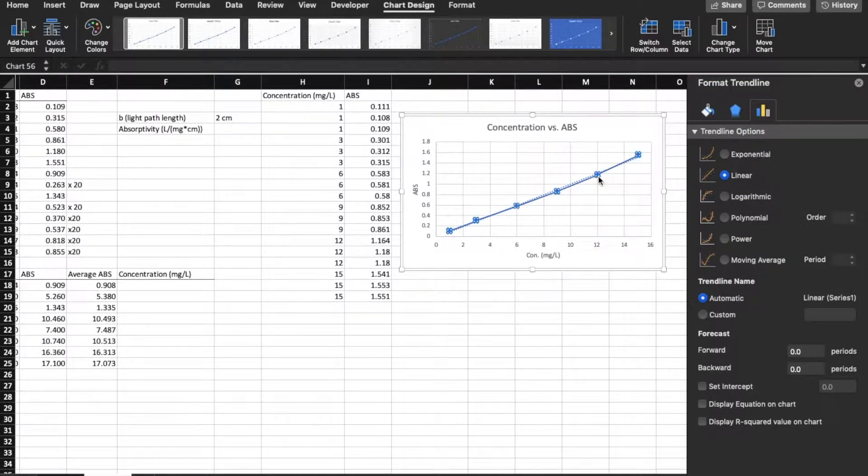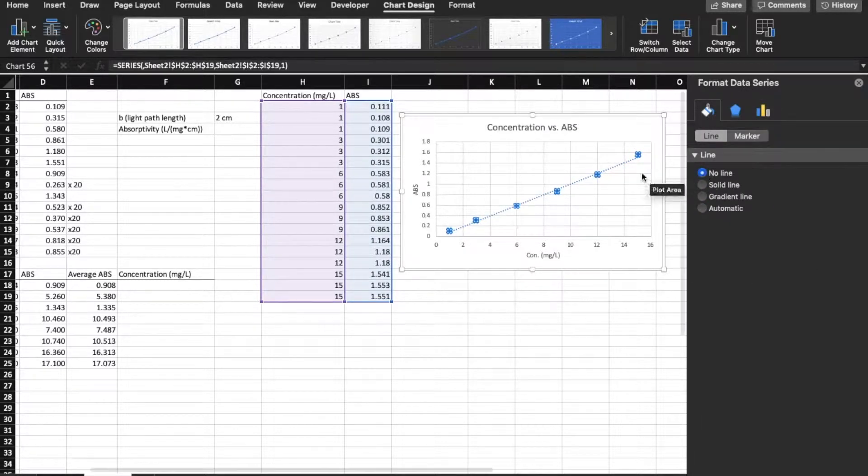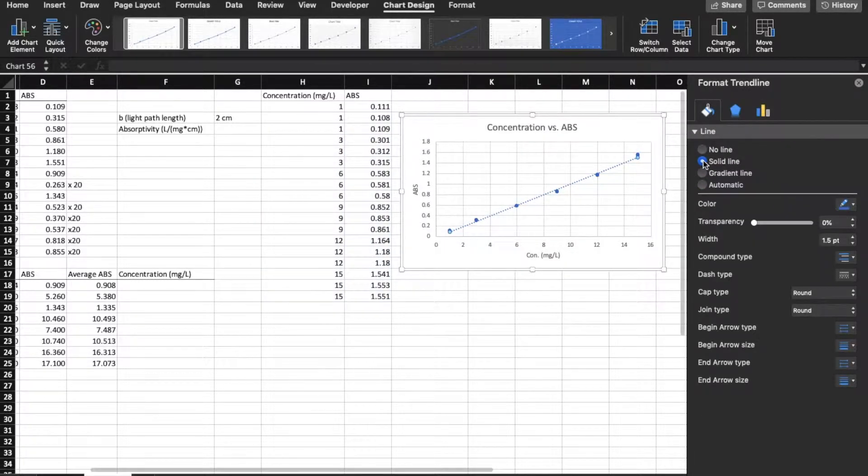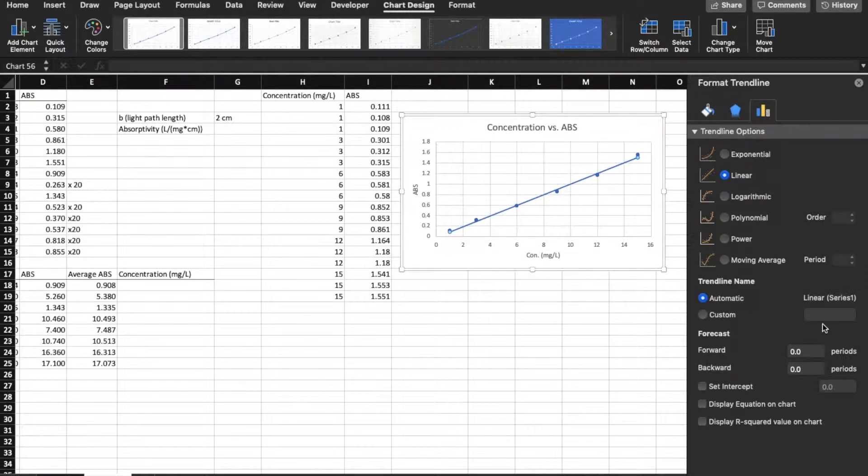First, I'm going to take the other line out that was there originally, so click on no line. The trend line, I'm going to make a solid line because I want it to stick out a little bit. And then at the bottom, or all the way on the right, I'm going to click on display equation and R squared value.